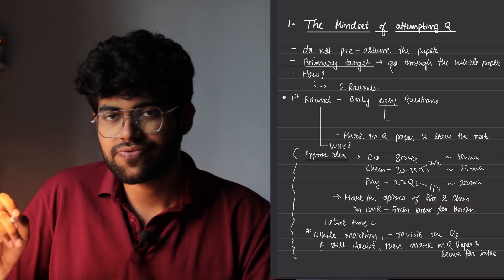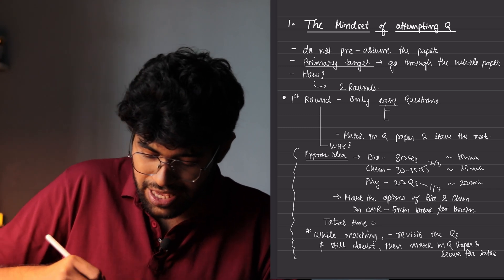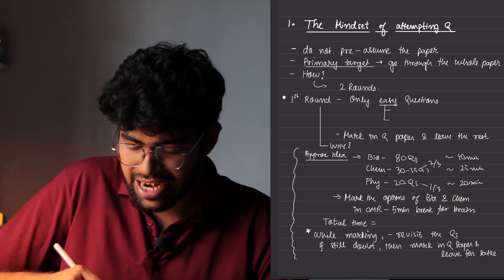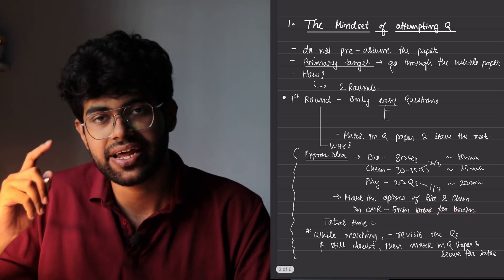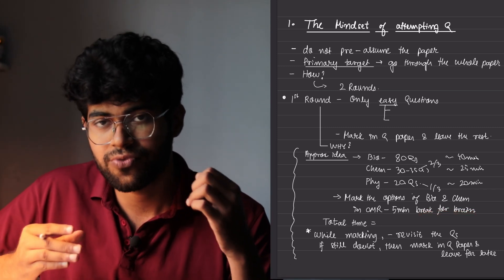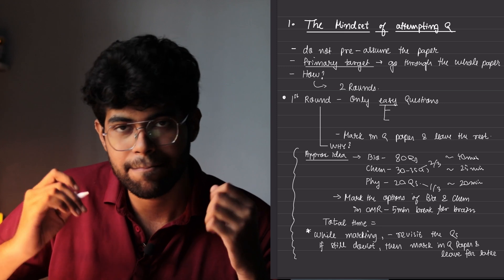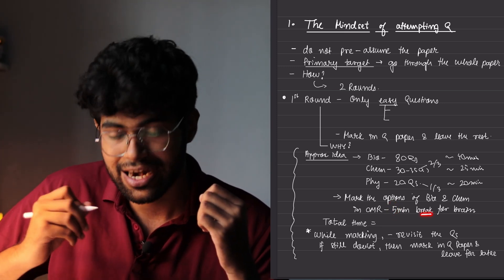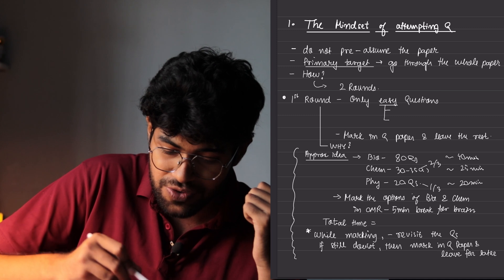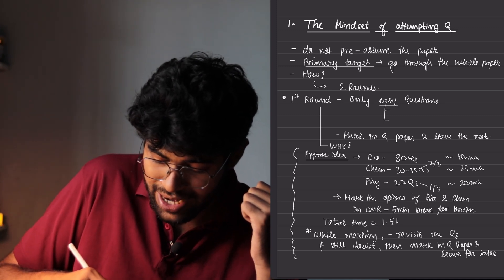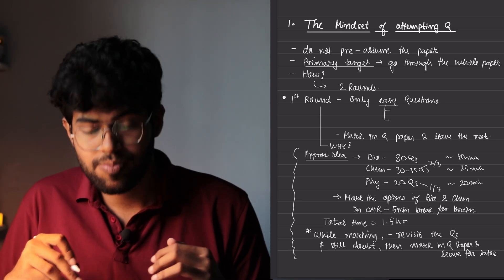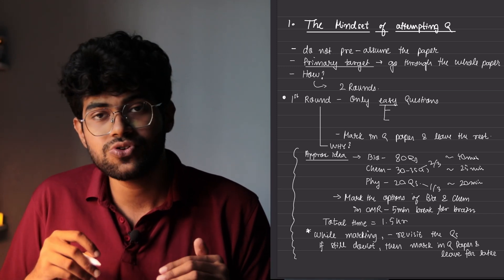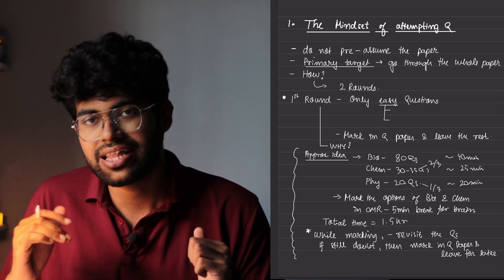Now, after doing this much, you should mark the options of at least biology and chemistry in your OMR sheet. Don't completely leave the OMR sheet for the end. Why? Because if you do this now, it will take five minutes at max and it will act like a break for your brain. You cannot continuously solve in the exam with the same amount of focus. You need to give your brain breaks in between and this five minutes will act like that break. So the total time that you will require is 1.5 hour. And in this 1.5 hour, by solving this much amount of easy questions, you will be able to score easily 500 plus in the exam already.